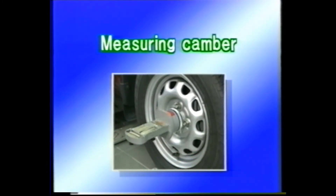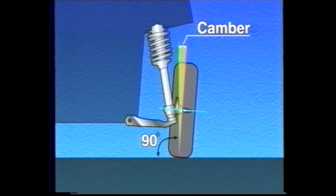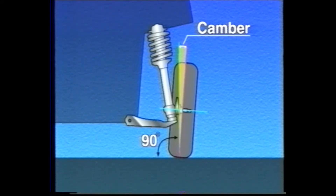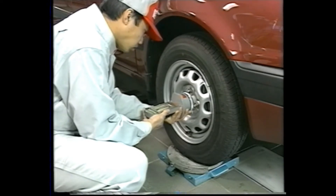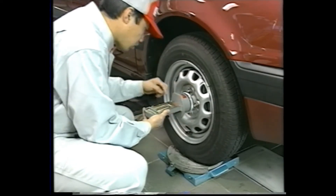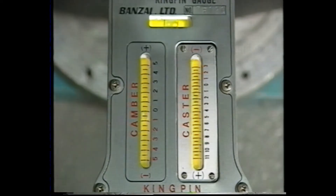Then release the turning radius gauge lock and measure the camber. Camber is the wheel's inclination as viewed directly from the front of the vehicle — measure the angle made by the wheel center line and the plumb line. With the wheels in the straight-ahead position, align the air bubble on the level with zero and take a reading of the air bubble scale of the camber measuring gauge.